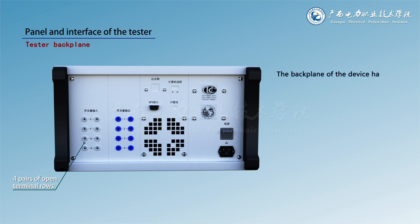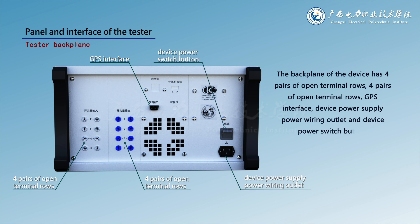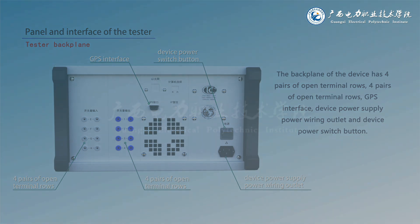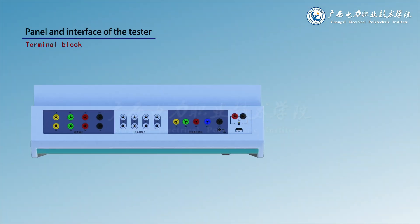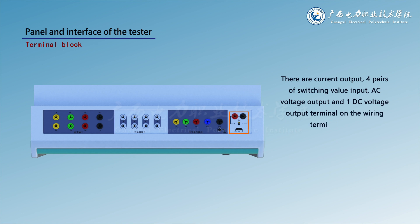The back panel of the device has four pairs of open terminal rows, a GPS interface, device power supply wiring outlet, and power switch button. The wiring terminal block includes current output, four pairs of switching value input, AC voltage output, and one DC voltage output terminal.